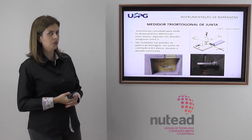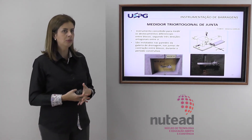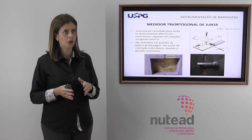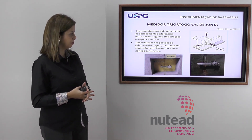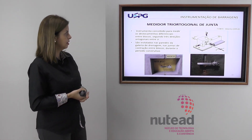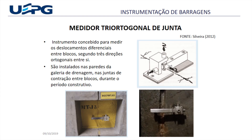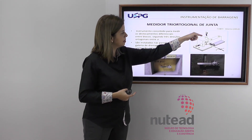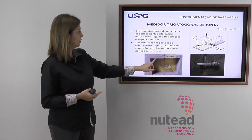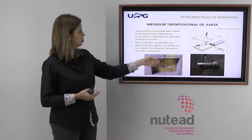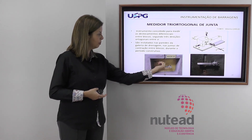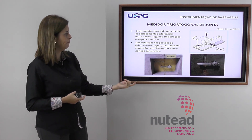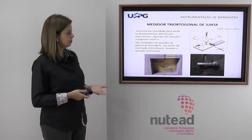O medidor triortogonal de junta serve para barragens de concreto, que são feitas em blocos com juntas entre eles. É importante monitorar o movimento dessas juntas. Esse instrumento mede os deslocamentos diferenciais entre os blocos segundo três direções ortogonais. São instalados normalmente nas galerias de drenagem, nas juntas de contração entre os blocos, com uma parte num bloco e outra parte no outro. Equipamentos de medição são colocados em cada furinho para verificar a deformação desses blocos.